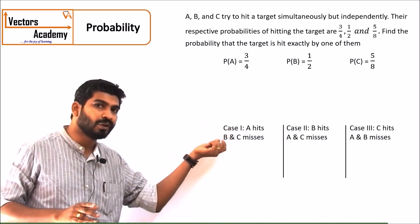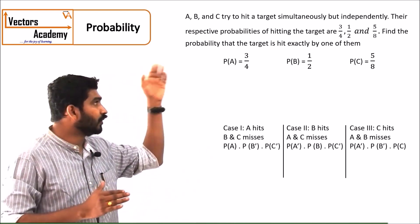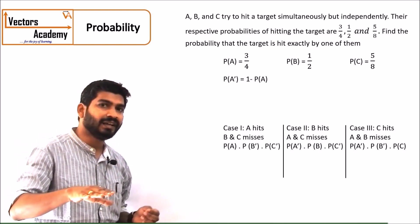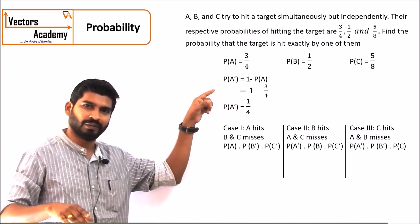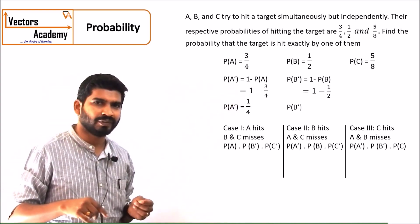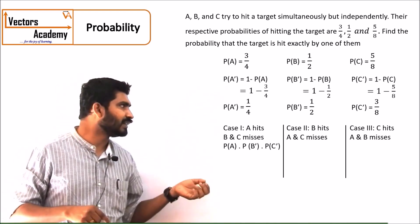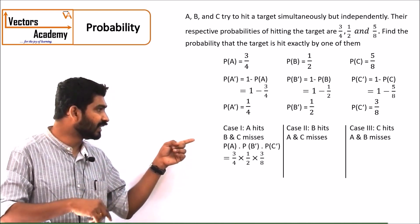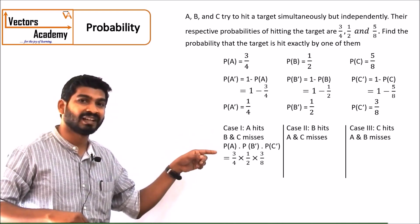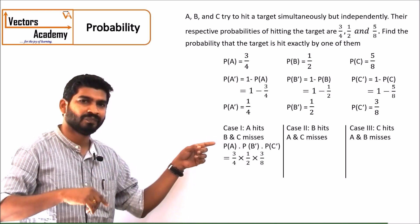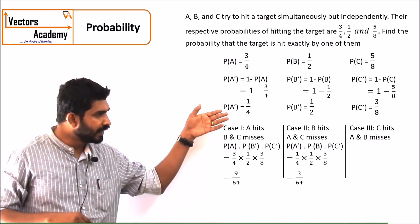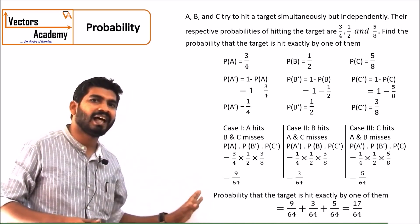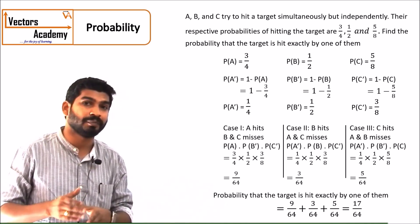The complement of each probability represents missing the target. P(A hits) = 3/4, so P(A misses) = 1/4. We find the complements for all three, then substitute into each case. For the first case: P(A hits) × P(B misses) × P(C misses) = 3/4 × 1/2 × 3/8. We calculate all 3 cases similarly, and the final probability that exactly one hits the target is the addition of all three cases. This is how we find probability when events are independent.